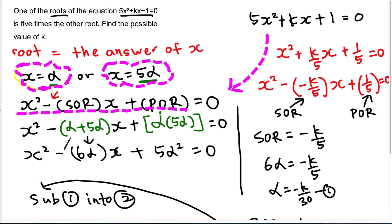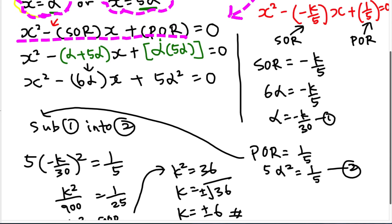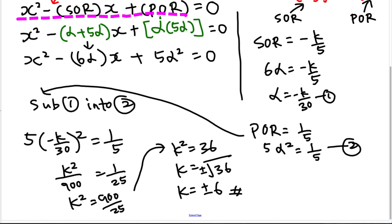I did that step just to show you — in the exam you can straight away take 5x² + kx + 1, change it into the pattern, and take out the sum of roots and product of roots. Once you have them, understand that sum of roots means alpha + 5-alpha, and product of roots means alpha × 5-alpha. Solve using simultaneous equations and you can easily get the correct answer. I hope this short video gives you some idea on how to solve this kind of question. Thanks for watching.